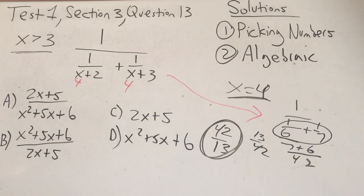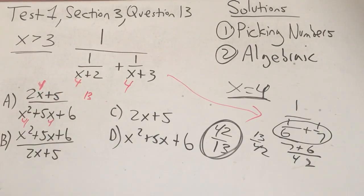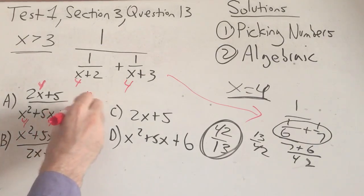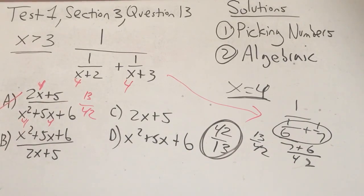Now I'm going to substitute the same value, x equals 4, into each answer choice. So we put a 4 wherever we see an x. On top, we have 8 plus 5 is 13. And on the bottom, we have 16 plus 20 plus 6, which ends up to 42. Look, it almost looks correct, but it's backwards. It's the reciprocal of the answer, so we know that one's wrong.